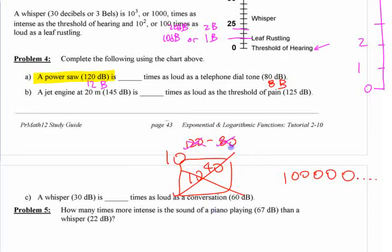The logarithmic aspect of this scale is in bells. So, instead of doing that, you have to do 12 minus 8. 10 to the 12 minus 8 gives you 10 to the 4th, which gives you how many times as loud? Yeah, 10,000 times as loud. All right, 10,000 times as loud.